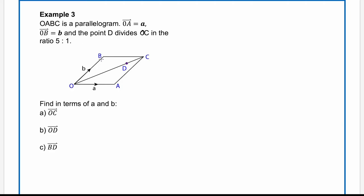For example three, we've been given a parallelogram. We've been told that OB is vector b, OA is vector a, and point D breaks up OC in the ratio five to one. To find OC, we go O to B plus B to C. Because it's a parallelogram, BC has the same direction and magnitude as OA, so BC equals vector a. Therefore OC equals b plus a, which gives a plus b.